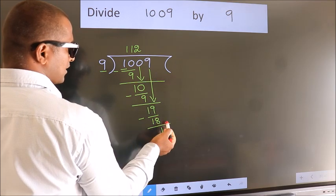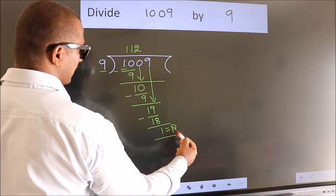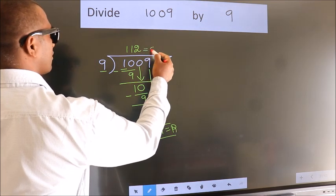No more numbers to bring it down. So we stop here. This is our remainder. This is our quotient.